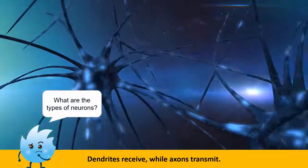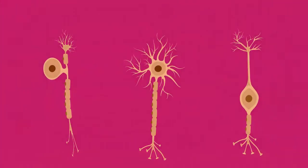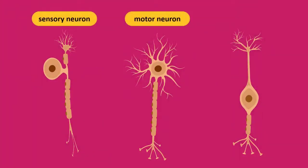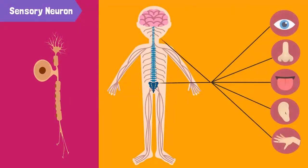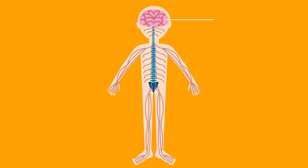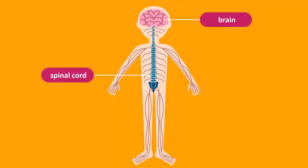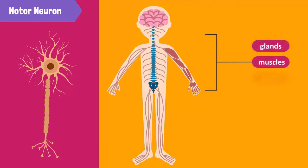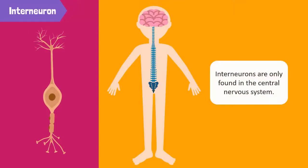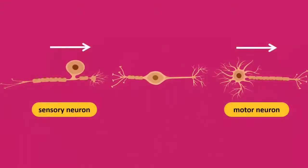What are the types of neurons? There are three types of neurons: sensory neurons, motor neurons, and interneurons. Sensory neurons carry messages from sense organs to the central nervous system. The central nervous system consists of your brain and spinal cord. They process the information brought to them by the sensory neurons. The motor neurons carry messages from the central nervous system to the other parts of the body such as muscles, glands, and organs. Interneurons, on the other hand, are only found in the central nervous system and connect a sensory neuron to a motor neuron.